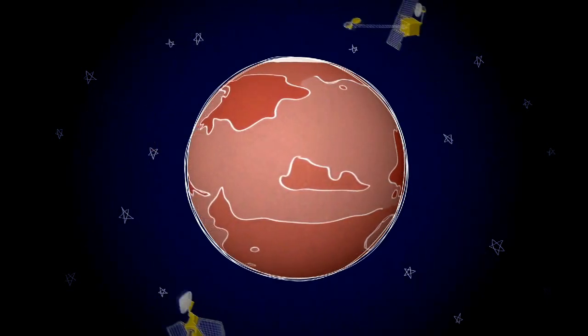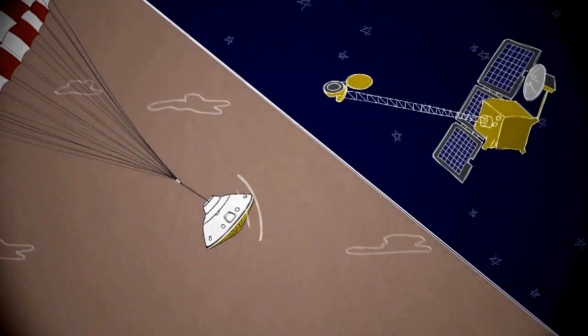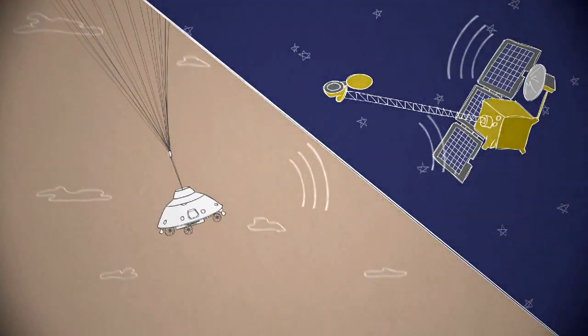But NASA has two spacecraft orbiting Mars that can help. For the second half of Curiosity's descent, the Mars Odyssey orbiter is in a good place to pick up the rover's signal and send it right back to Earth.